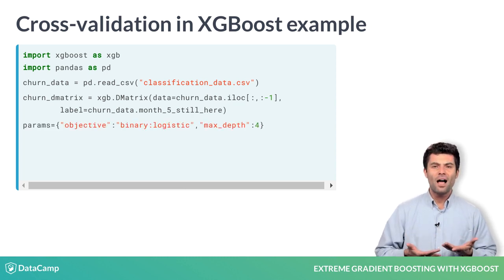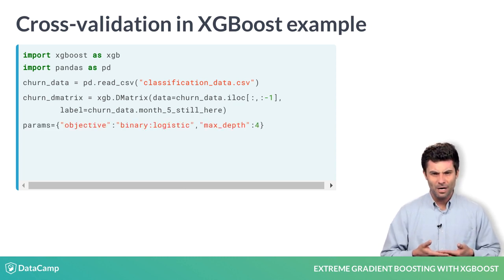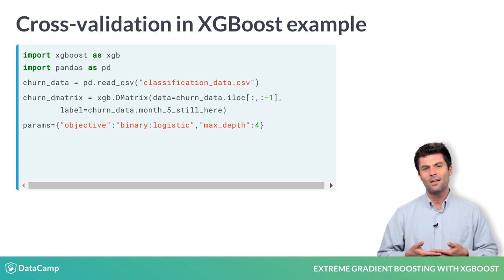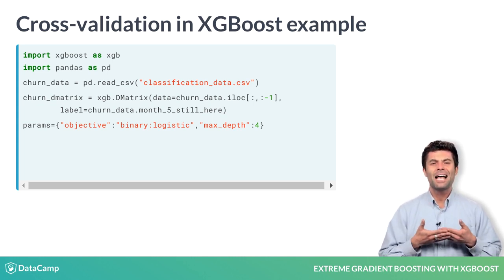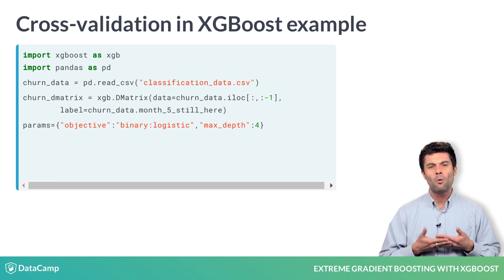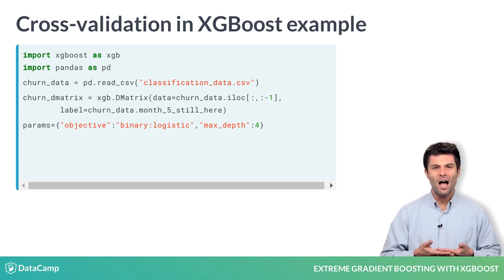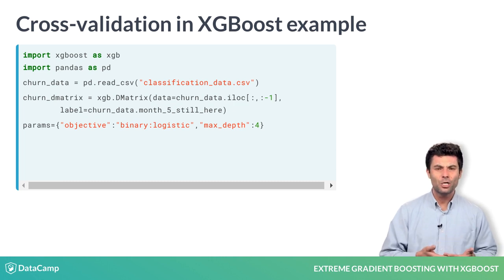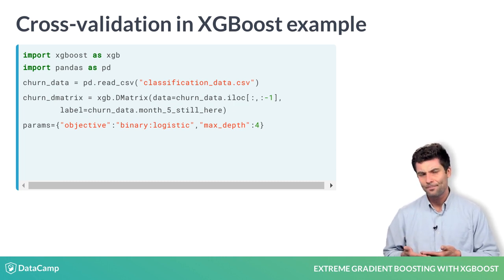In line 5, we are creating a parameter dictionary to pass into our cross-validation. This is necessary because the CV method has no idea what kind of XGBoost model we are using and expects us to provide that information as a dictionary of appropriate key-value pairs.